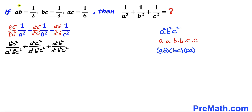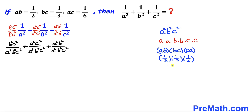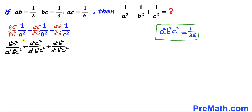We can see that a times b equals 1/2, so we replace it with 1/2. Likewise bc equals 1/3, so we replace bc with 1/3. And ac equals 1/6, so we replace ca with 1/6. Multiplying numerator and denominator gives us 1/36, so a²b²c² turns out to equal 1/36.